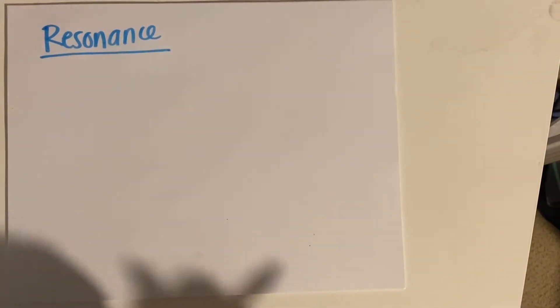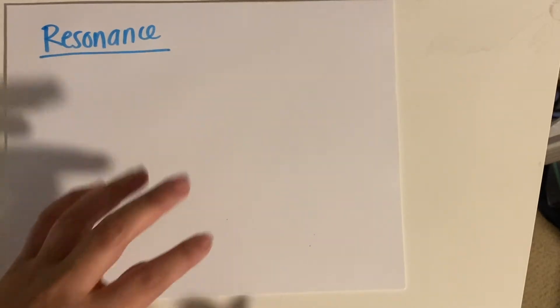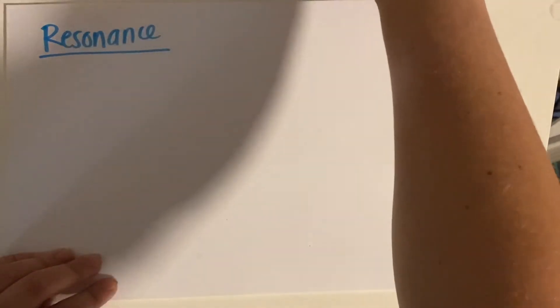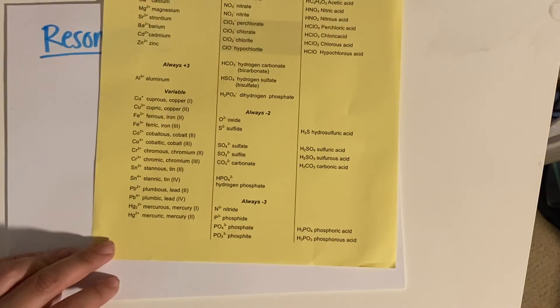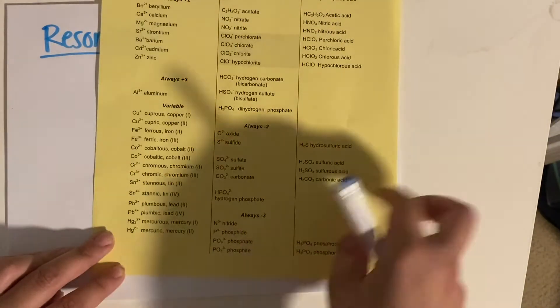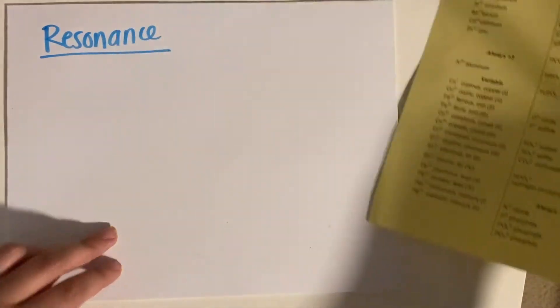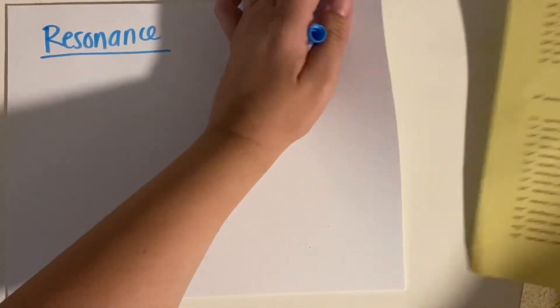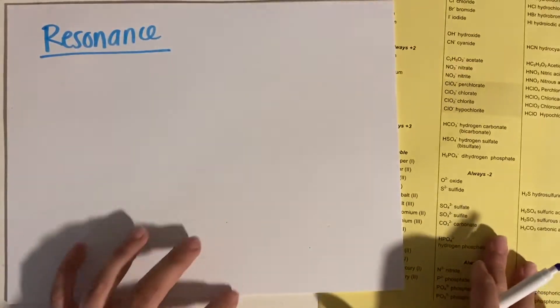So most commonly, you'll run into these things when you deal with your polyatomic ions. Your center column here, that will be the most common ones that we will come across for this.